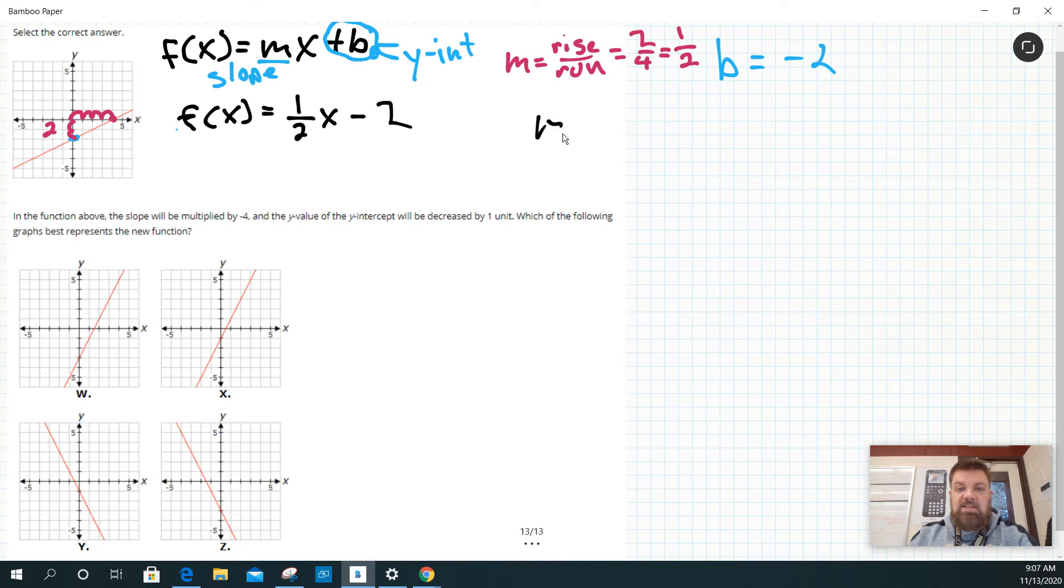So if my slope is equal to one-half and that gets multiplied by negative four, the slope of the new line down here would be negative four times one-half. Well, one-half of negative four is just negative two.